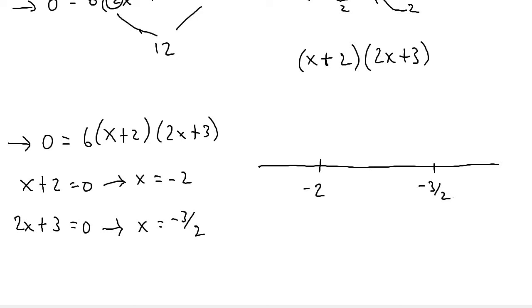So now once again, we're just picking values. And the main thing we're trying to do is find out whether they are positive or negative. We don't need the exact value. So to the left of negative 2, I can put negative 3. And make sure you plug it into the derivative and not to the original equation. So when I plug in negative 3 to the derivative, I'll get a positive 6 times a negative number times another negative number. So negative times a negative is positive, and positive times positive is positive. So I'll put a plus sign there.